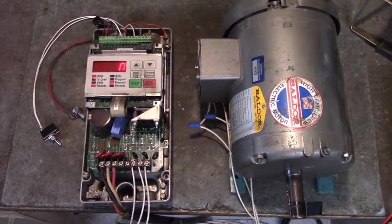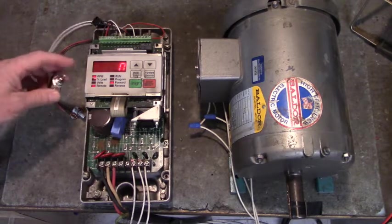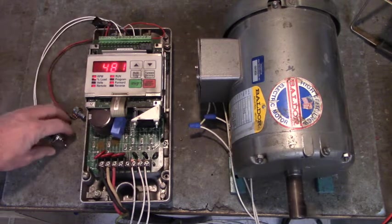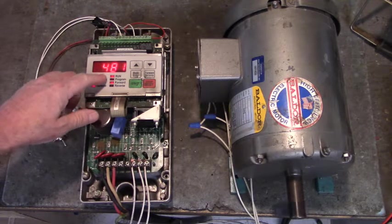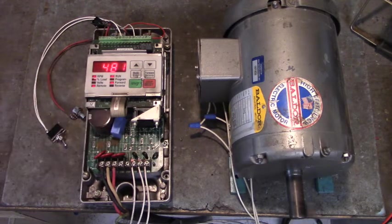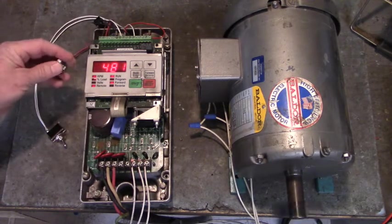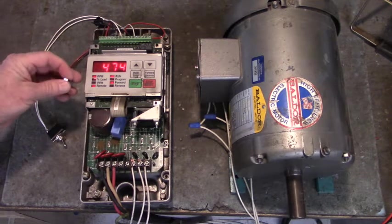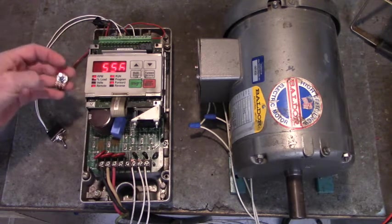We just powered up the drive. Let's close the start switch. And right now we're running at 481 RPM. We can change the speed of the motor with this potentiometer.